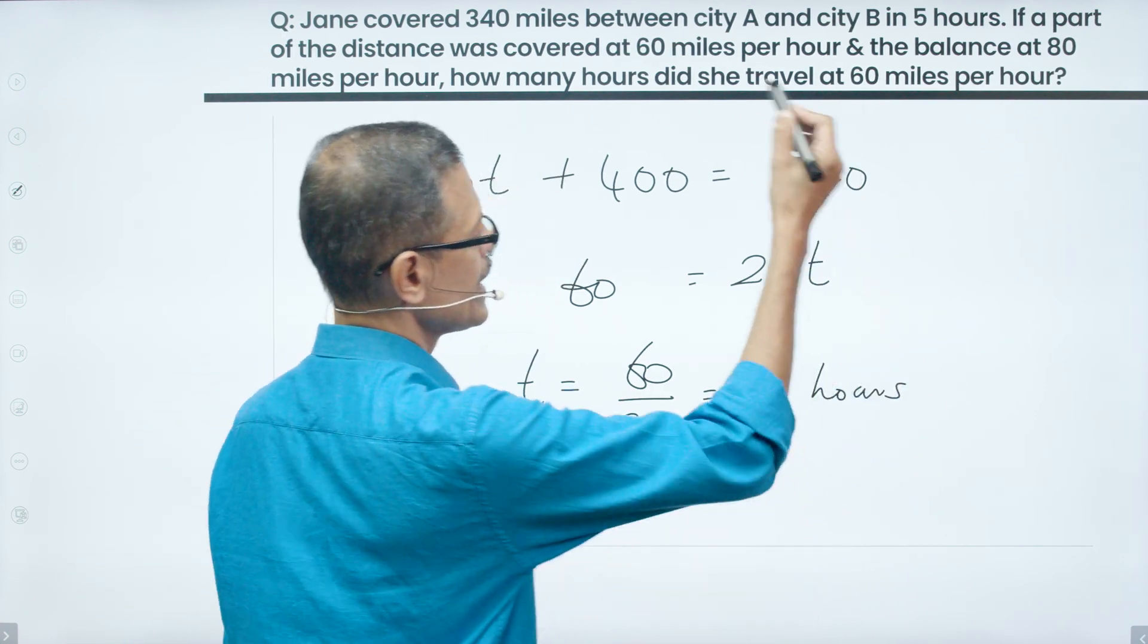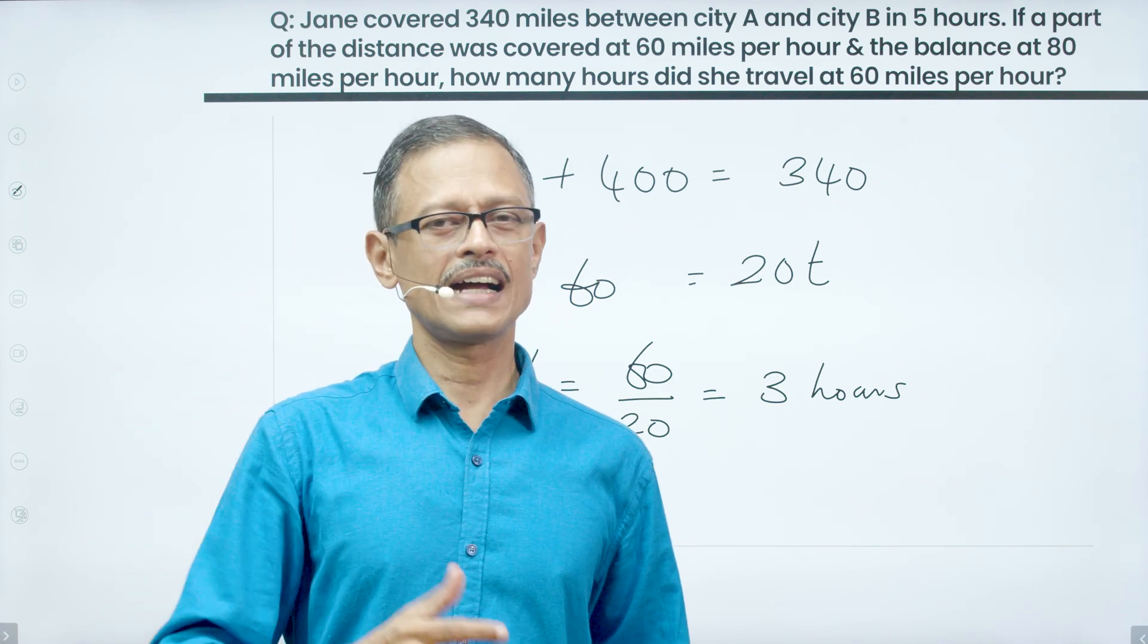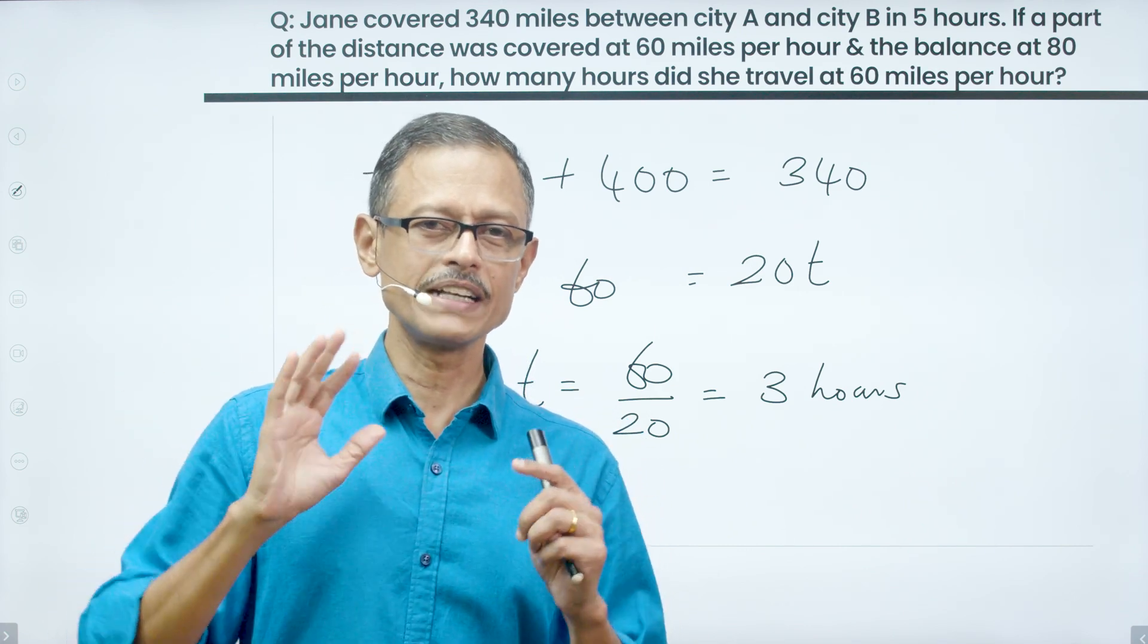So she covered 3 hours at 60 miles per hour and the remaining 2 hours at 80 miles per hour. So this basically completes the question for us.